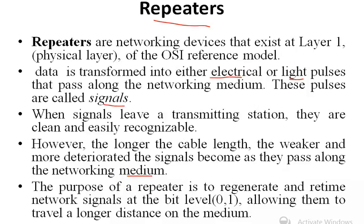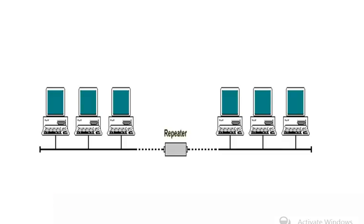The purpose of a repeater is to regenerate and retransmit network signals at the bit level — that is, at the 0 and 1 level — allowing them to travel longer distances on the medium.